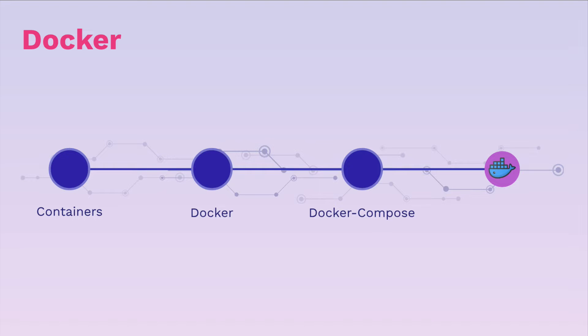We're going to use Docker Compose to compose a Redis server, a Postgres database, and an API server all into one, so that they all run from one command. By the end of it, we're going to feel very comfortable with Docker whenever we deploy our applications.